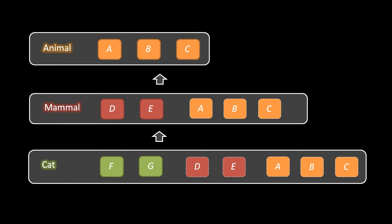In practice, the vast majority of classes programmers make don't really model real-world objects — they tend to represent much more abstract things. When dealing with abstract entities, it's often not so obvious when one type is truly a subtype of another. However, when you can successfully identify such relationships and create a proper inheritance relationship, you may save yourself from duplicating functionality that already exists in another class. It's fairly common that a new feature can be implemented by simply taking an existing class and extending it — producing a subtype — allowing you to focus on just writing the code for the new functionality.